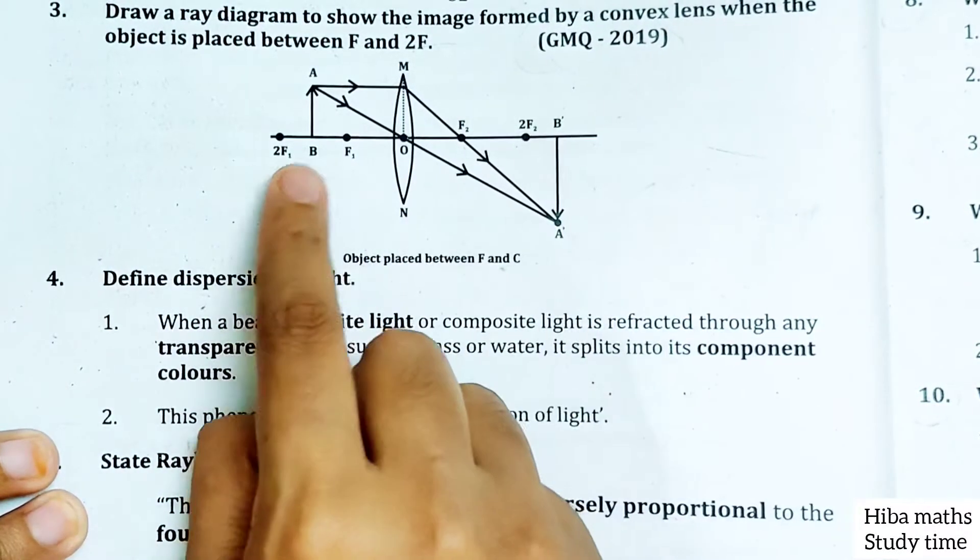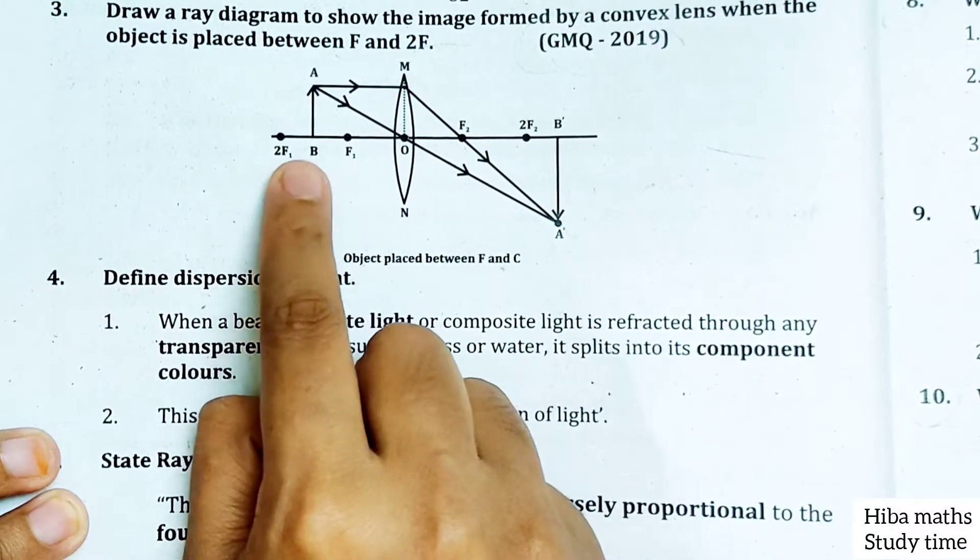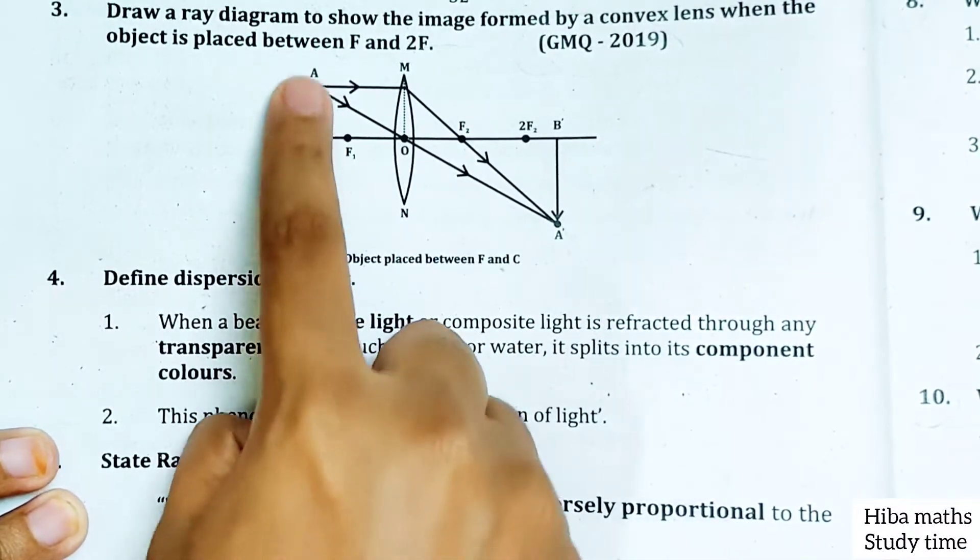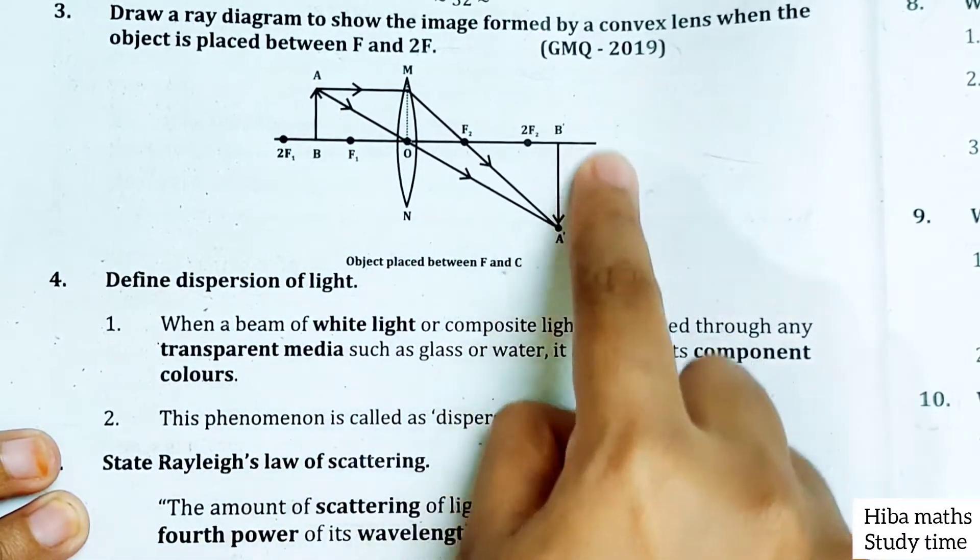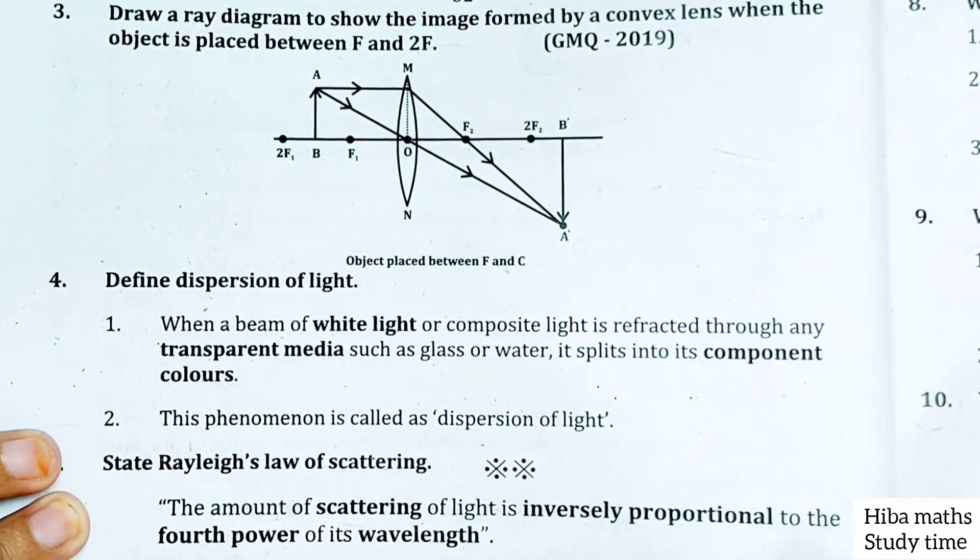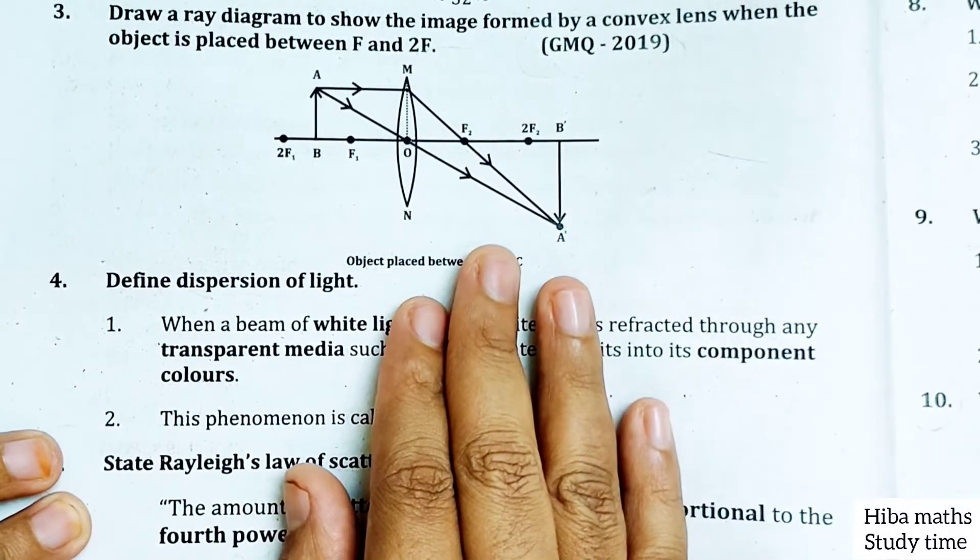This is the third question. The object's image is inverted. If we go to the diagram, this is a very important question.